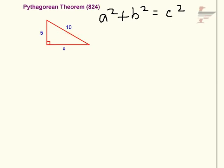So we're going to substitute 10 in for c. That's one of the most important things to notice: 10 goes right in here for c squared. a and b are interchangeable as x and 5 are the legs, so I'm going to use x squared plus 5 squared equals 10 squared.